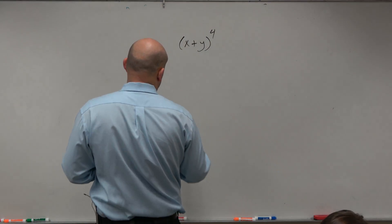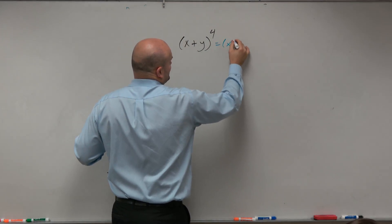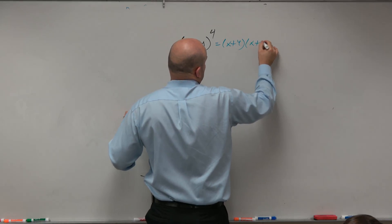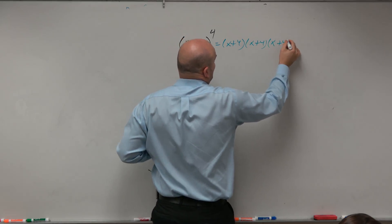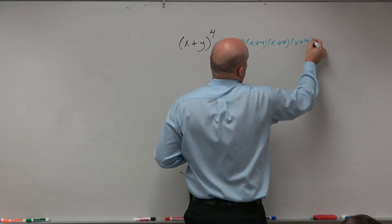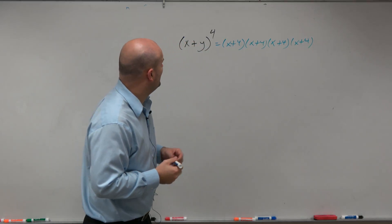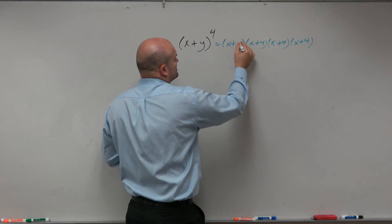So in this example, again guys, we know that this is going to be x plus 4 times x plus 4 times x plus 4 times x plus 4. It's x plus y, I don't know why, I guess.